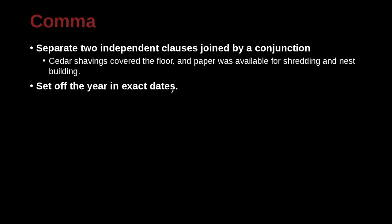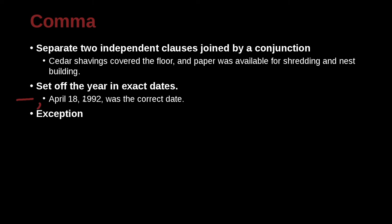You also use a comma to set off a year for dates. For example: 'April 18, 1992, was the correct date.' So if you put this inside a sentence, you not only need the comma to separate the month and day — which is the American style — but you also need to separate out the year because it's a date. Here's an exception: 'April 1992 was the correct month.' This is not an exact date, so we're only separating the year out when it is an exact date.